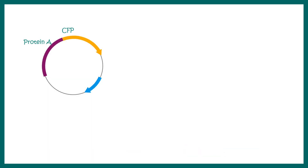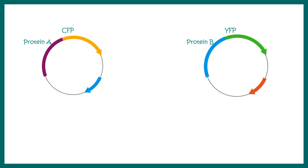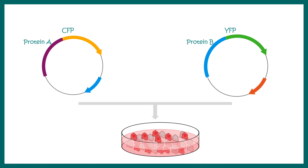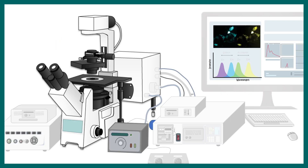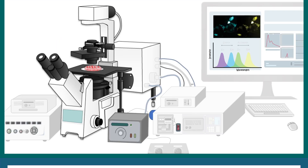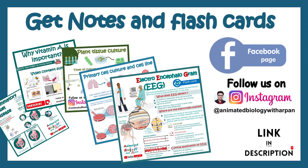In order to perform that, we need to clone our protein of interest into an expression vector where CFP and YFP are already present. We clone it with the YFP and CFP tag and then express it in a mammalian cell or other systems. Then we can perform the FRET experiments. So we looked at three examples where protein tagging is really useful in biomedical research.